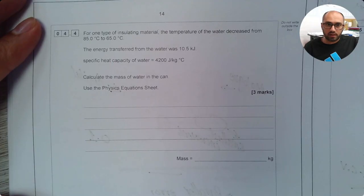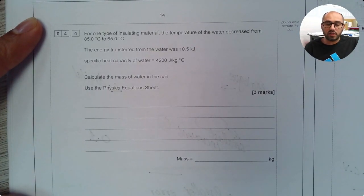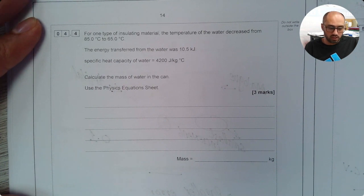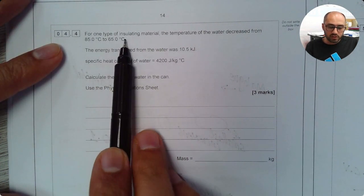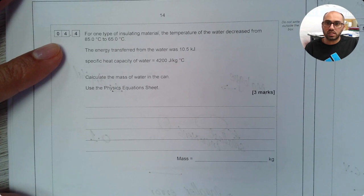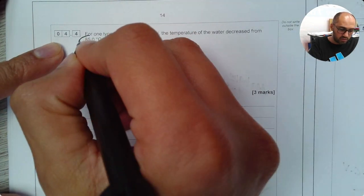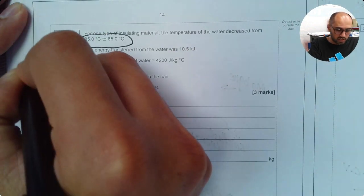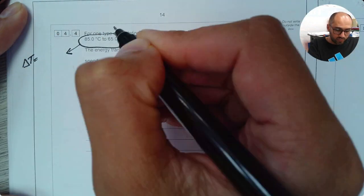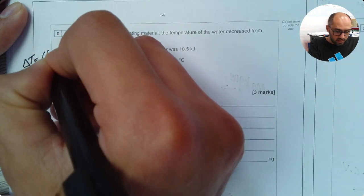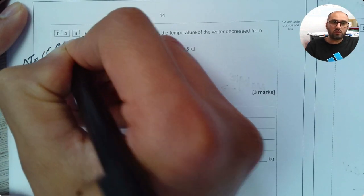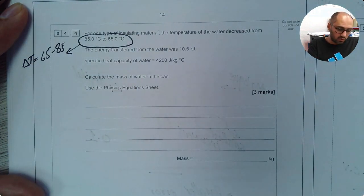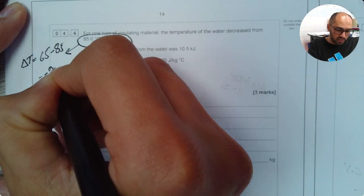On this part now there are a number of values given to us. So probably we'll have to make use of an equation. So here it says for one type of insulating material the temperature of the water decrease from 85 to 65 degrees Celsius. So this means from these values I can work out my delta T which will be 65 take away 85. It is always final take away starting value and that is minus 20 degrees Celsius.